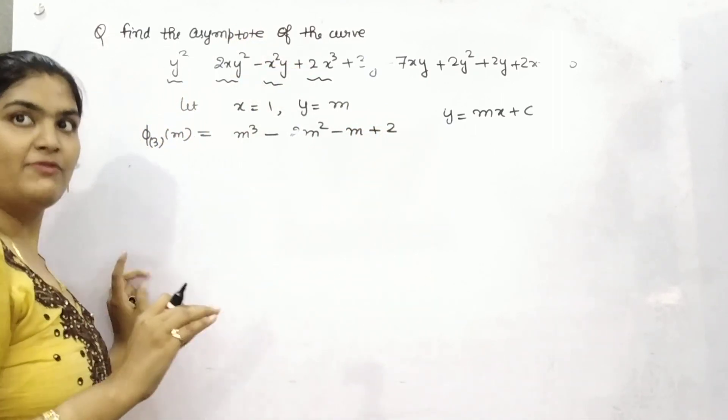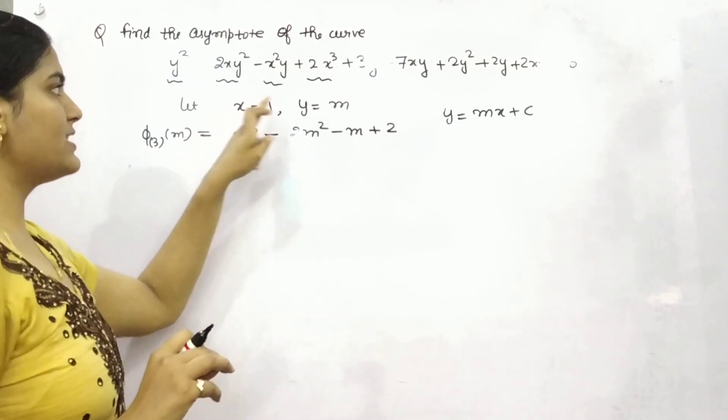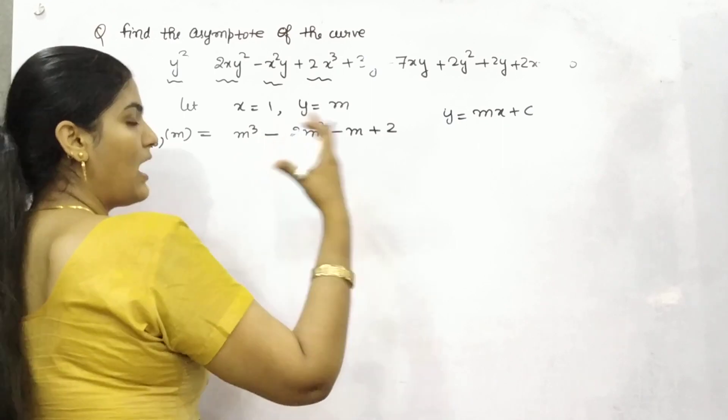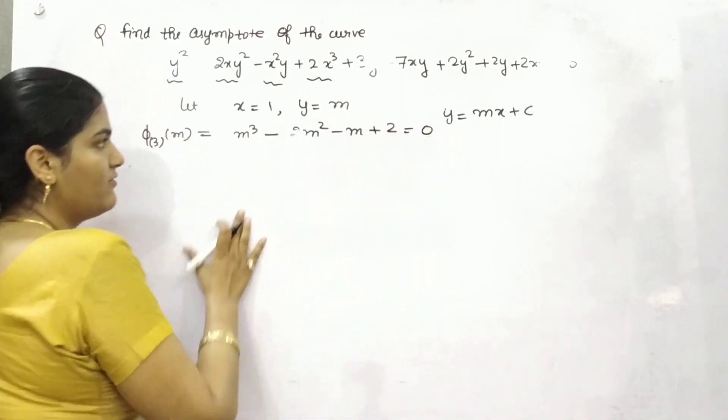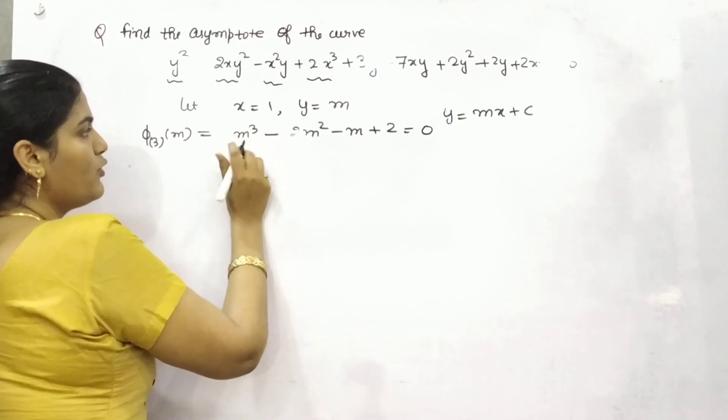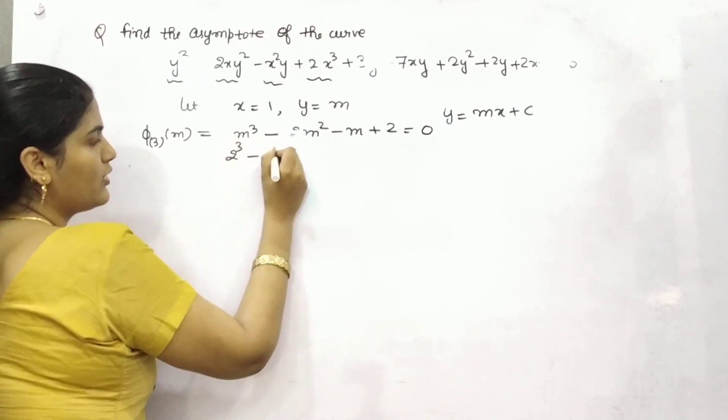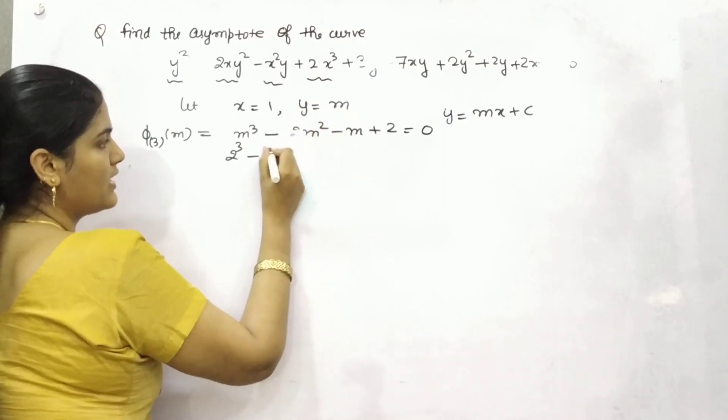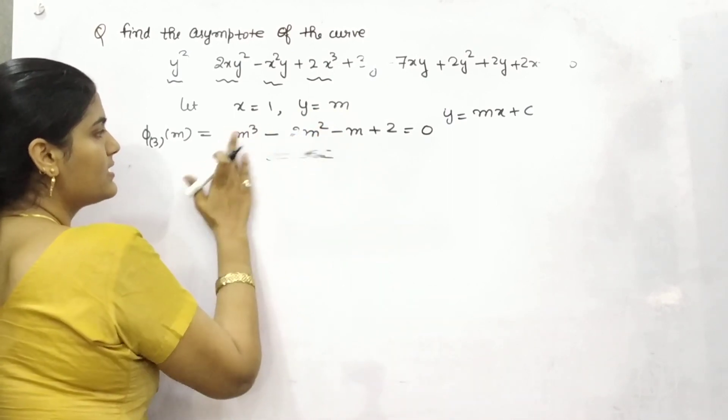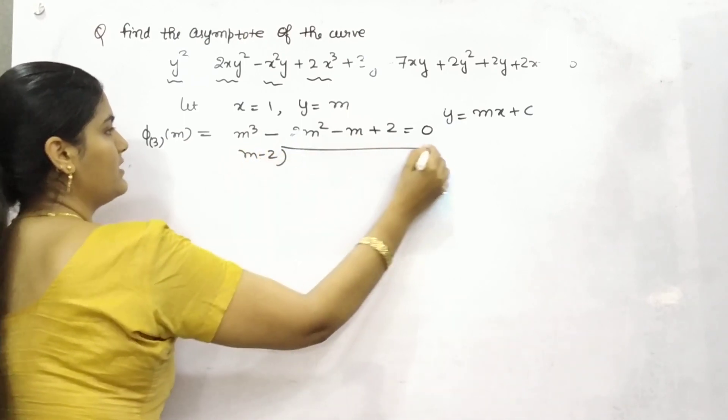Now after putting, after substituting x as 1, y as m into higher order, higher degree, you need to put them as 0 and find out the value of m. So you can, if you put m as 2, what will you get? 2 times 2 is 4, times 2 is 8, minus 2 plus 2, 0. So that means m is equal to 2 is your factor.